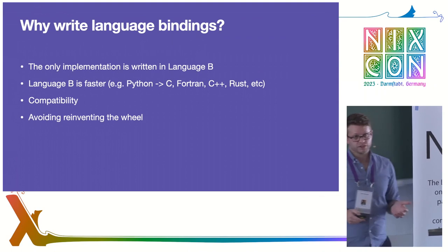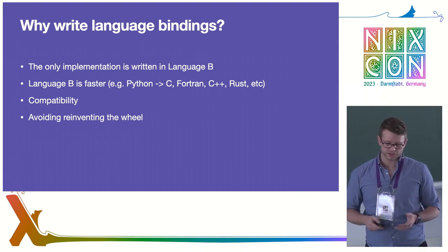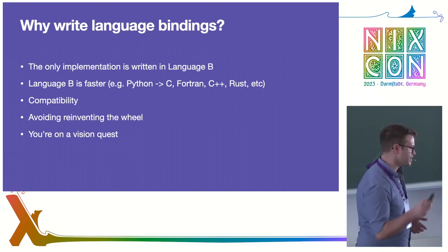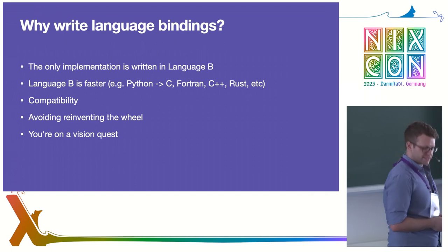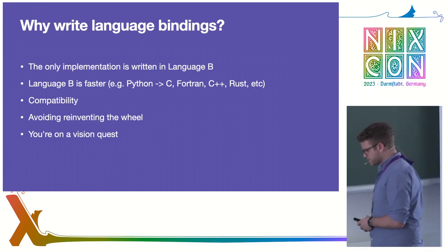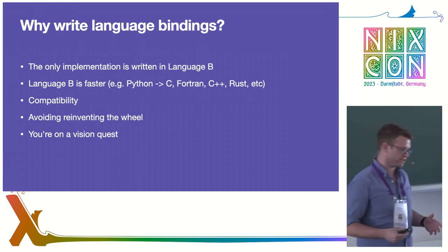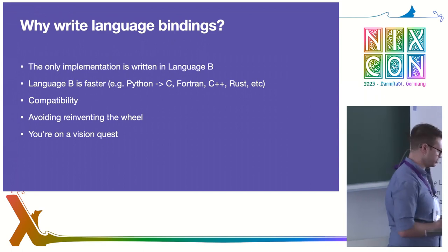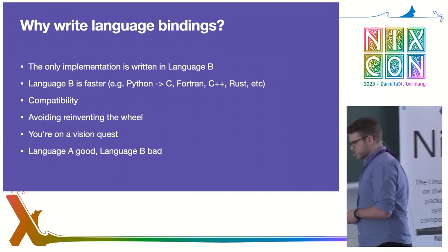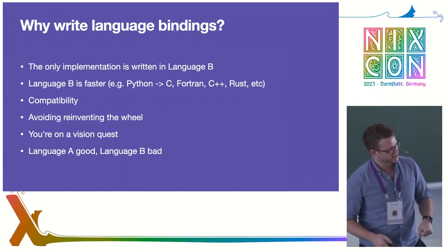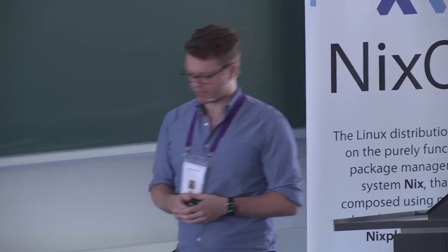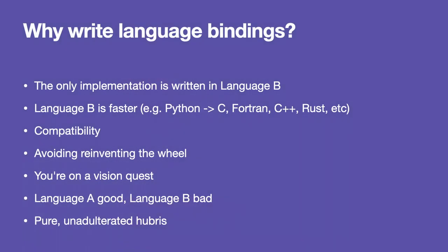The next reason is avoiding reinventing the wheel — somebody's already written something that parses flake references, why do it again? Then there's the vision quest: you cannot reach inner peace until you force these two languages to reconcile with one another. Not a common use case, but a use case nonetheless. There's also the 'language A good, language B bad' — typical language war stuff. And finally, pure unadulterated hubris — meaning nobody told you not to before you started.